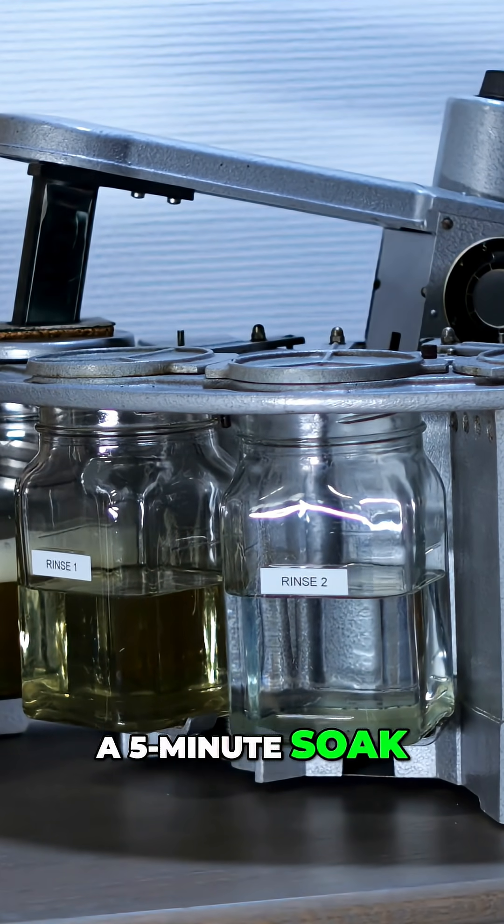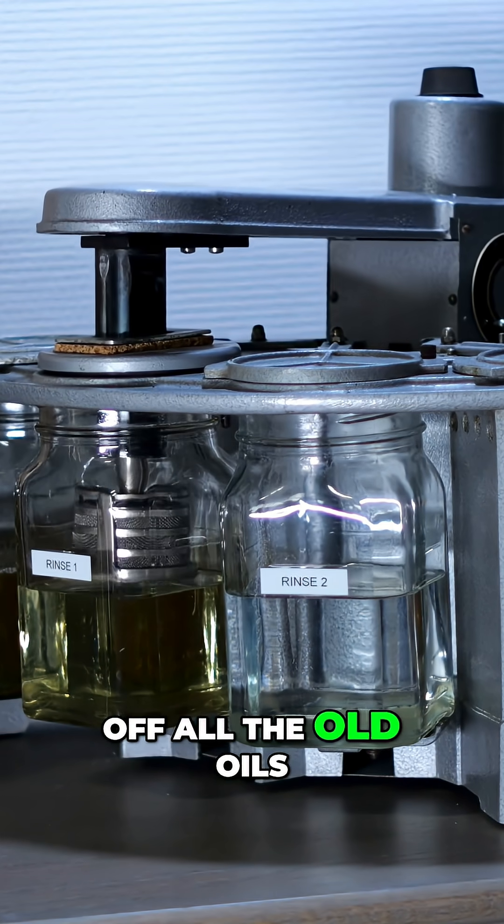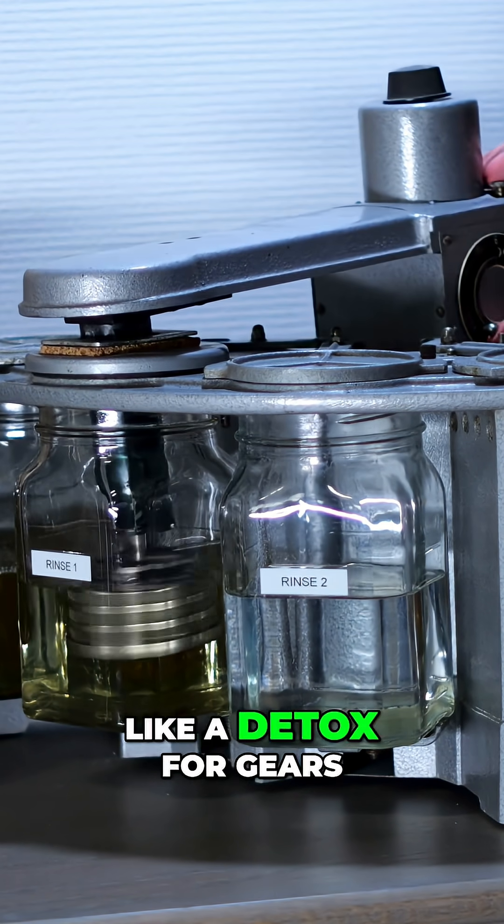Step one, a five-minute soak in L&R cleaning solution. It scrubs off all the old oils and watchmaker sins like a detox for gears.